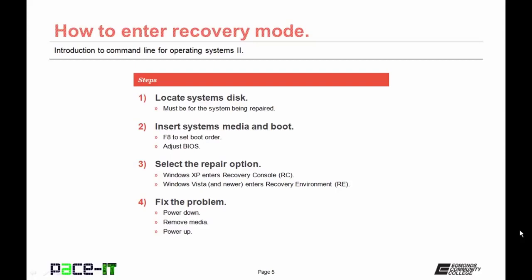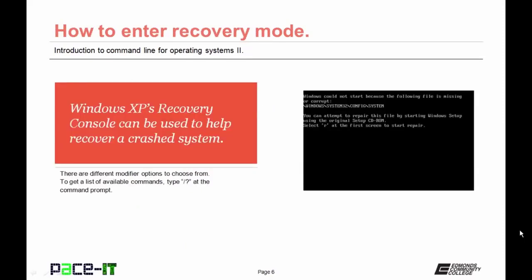Once it comes up, you'll be given an option to repair. With Windows XP, selecting that option enters the repair console. With Windows Vista and newer, you enter the repair environment. You fix the problem, then power down, remove the media, and power the PC back up to ensure the repair was made. In the recovery console in Windows XP, once you have the command prompt, you can type forward slash question mark and enter to find the list of available commands. The recovery environment in Vista and newer works similarly.